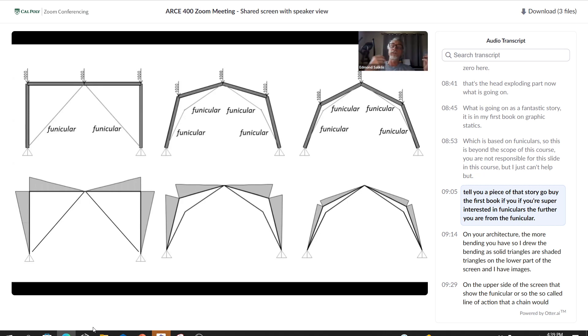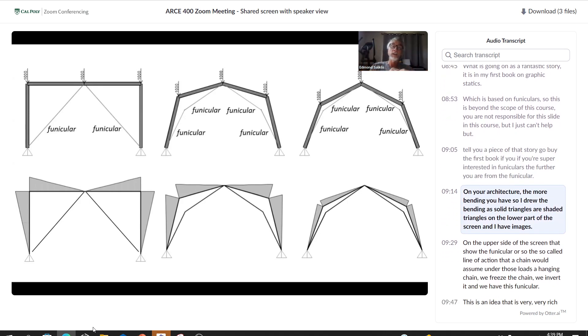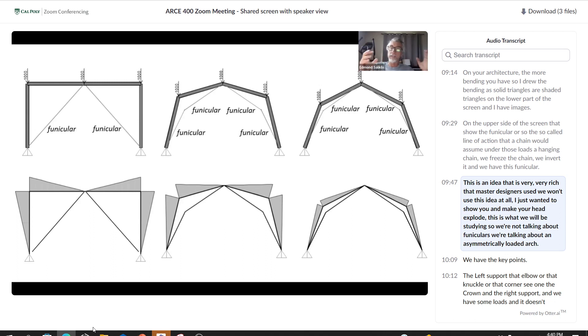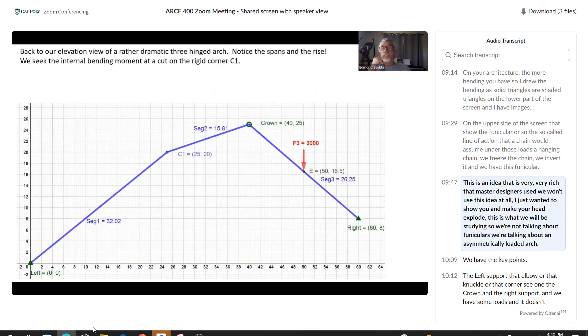The further you are from the funicular on your architecture, the more bending you have. So I drew the bending as solid triangles or shaded triangles on the lower part of the screen and I have images on the upper side of the screen that show the funicular or the so-called line of action that a chain would assume under those loads. A hanging chain, we freeze the chain, we invert it and we have this funicular. This is what we will be studying. We're not talking about funiculars, we're talking about an asymmetrically loaded arch.